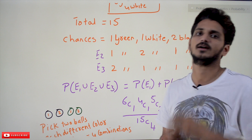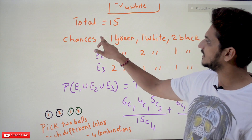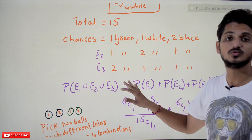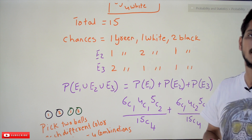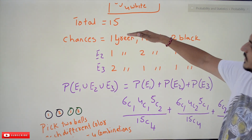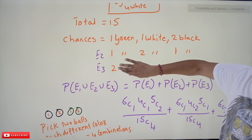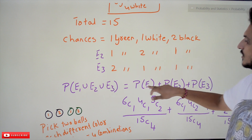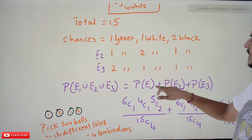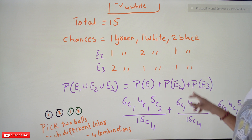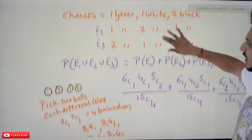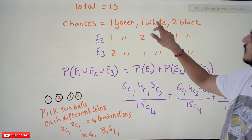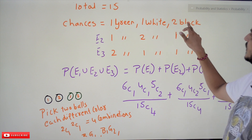Events E1, E2, and E3 are all mutually exclusive — either this event can happen, or this one, or that one. So P(E1 ∪ E2 ∪ E3) = P(E1) + P(E2) + P(E3). Now, for E1 — one green, one white, two black — we write the probability as 6C1 × 4C1 × 5C2 divided by 15C4.